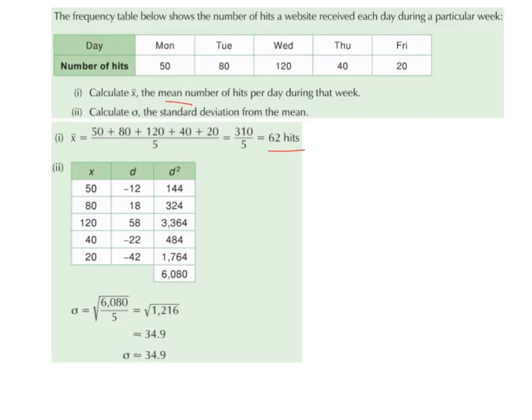So 62 hits is the mean number of hits per day during that week. Part 2, calculate the standard deviation from the mean.